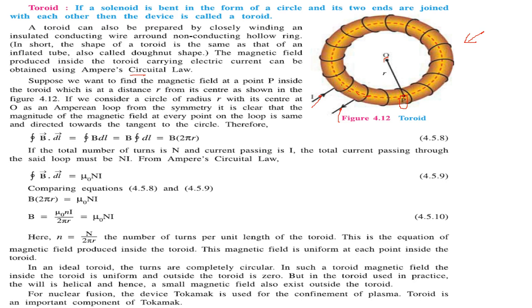This is an Amperian loop. From the symmetry, it is clear that the magnitude of the magnetic field at every point of the loop will be the same, and it will be directed towards the tangent of the circle, like this tangent to the circle.